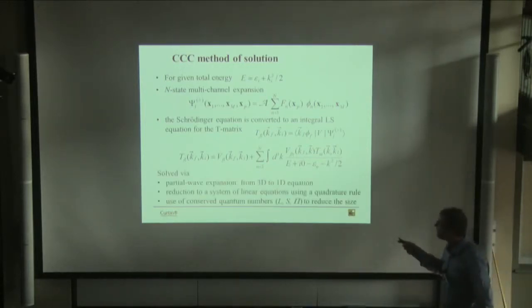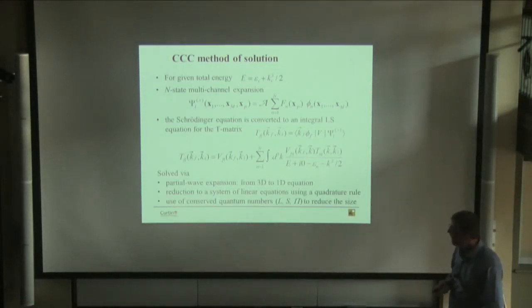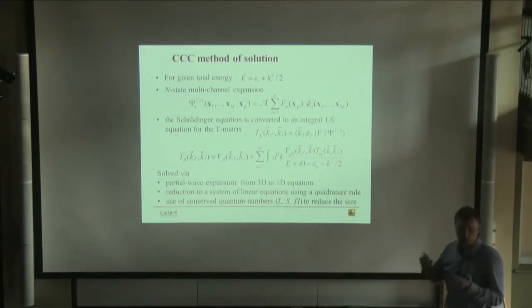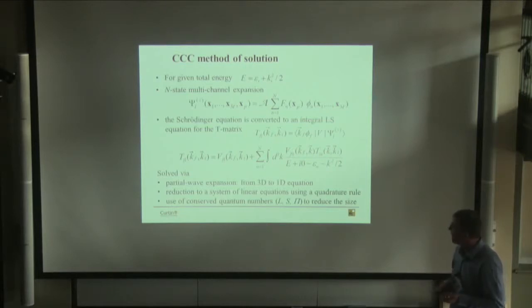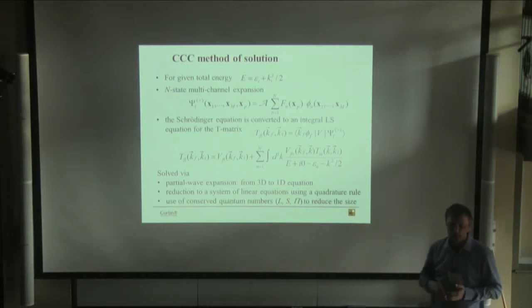To solve this equation, we perform a partial wave expansion, going from a 3D to a 1D equation. Then we use a quadrature rule to replace integration by summation and solve linear equations. We use conserved quantum numbers — total angular momentum, total spin, and parity — to reduce the size of the calculation and make it feasible.